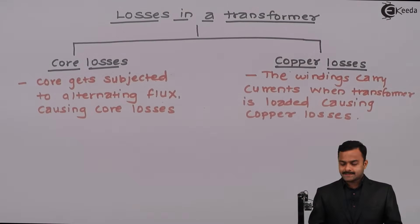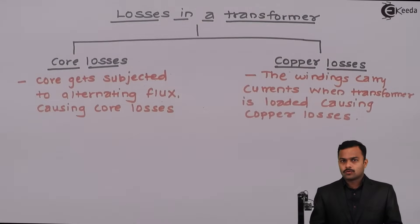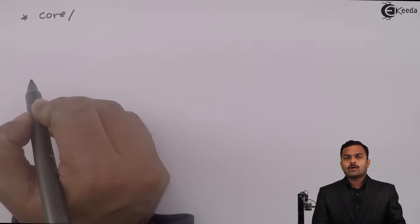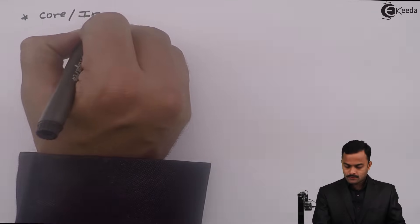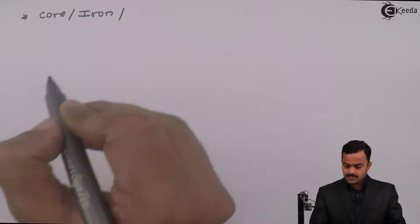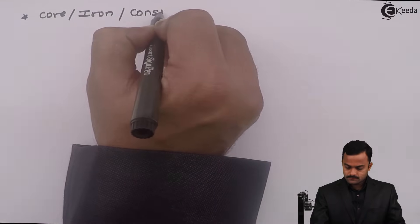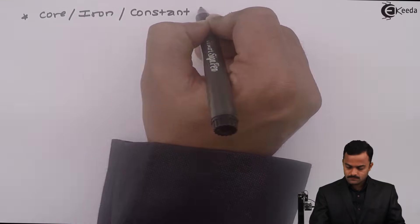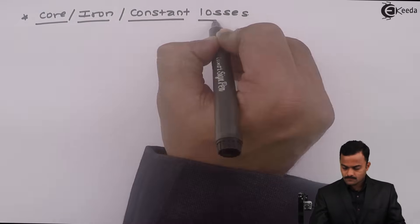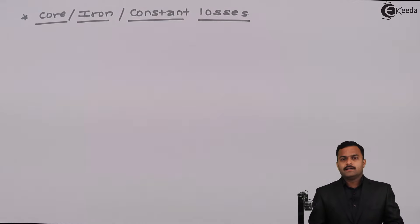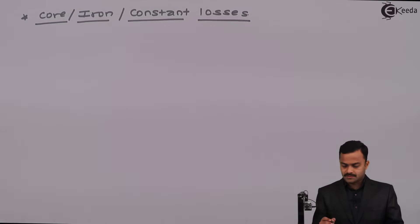Let us discuss these two losses one by one. Core losses are also called iron losses or constant losses. We get two different types of core losses.